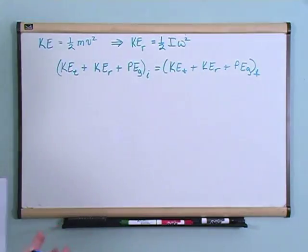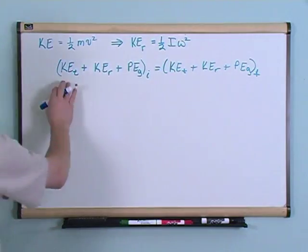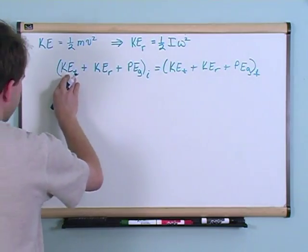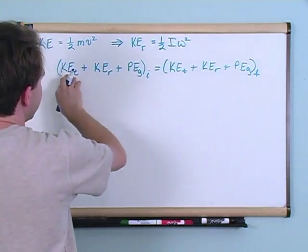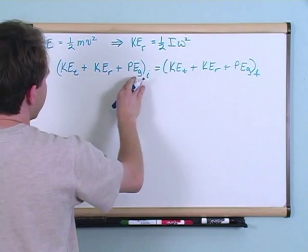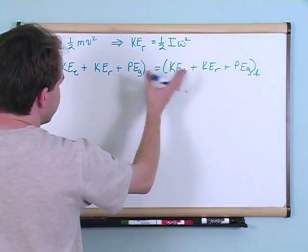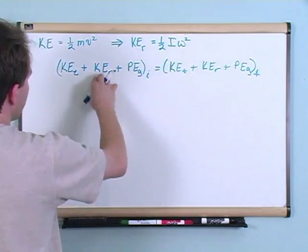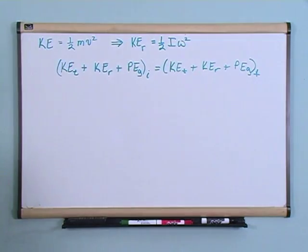If you have an object, before we only talked about the kinetic energy of translation and the potential energy. Well, now there's just one more term to consider if the system happens to be rotating. So this is kind of important.